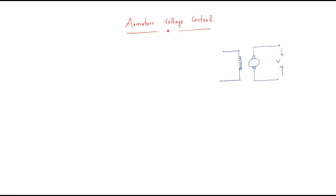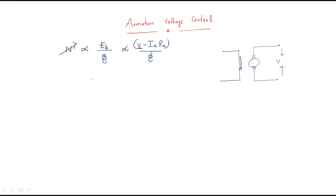Next we enter into the topic of armature voltage control. To understand this we need the speed equation: speed is proportional to the back EMF and inversely proportional to the flux. Speed equals voltage minus armature drop divided by flux. Observe here that speed is proportional to the armature voltage.